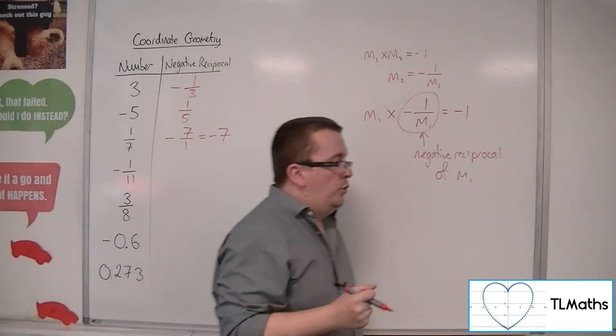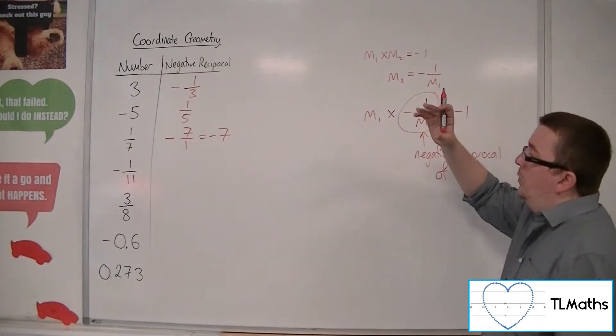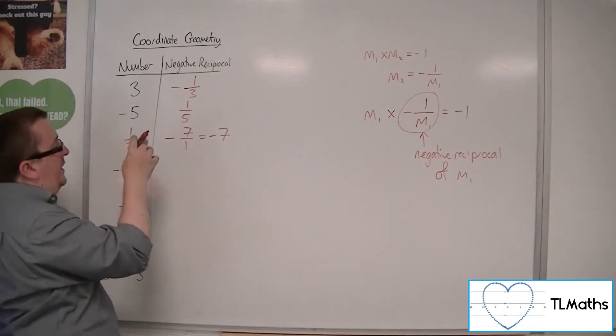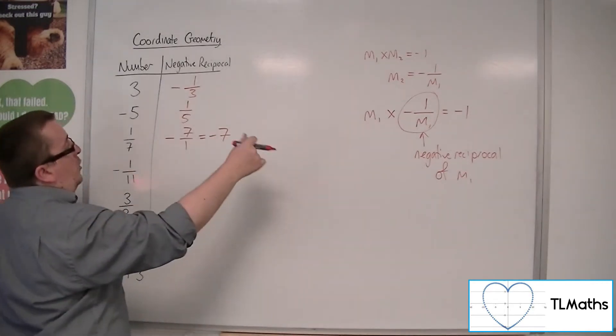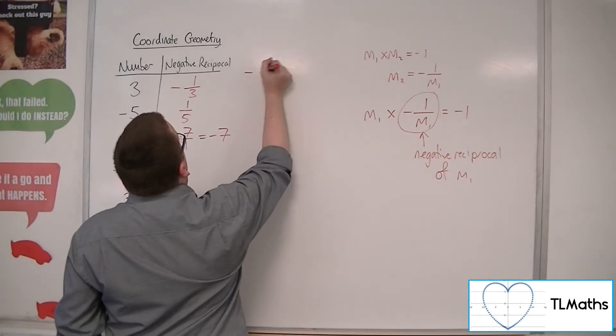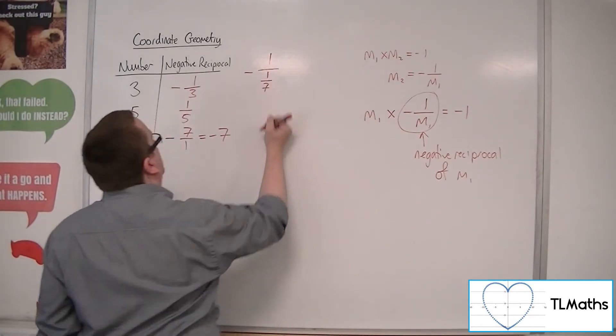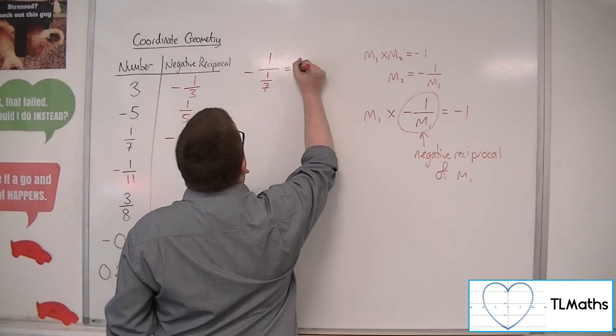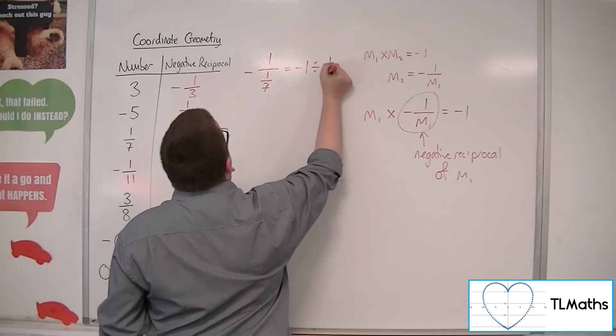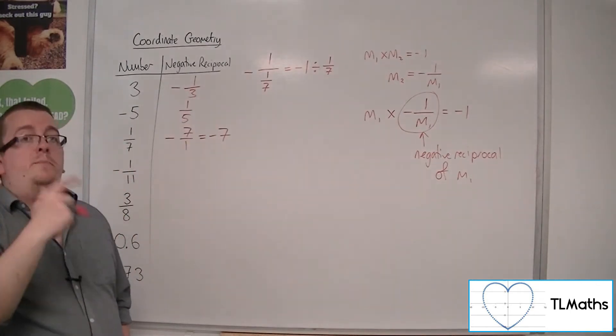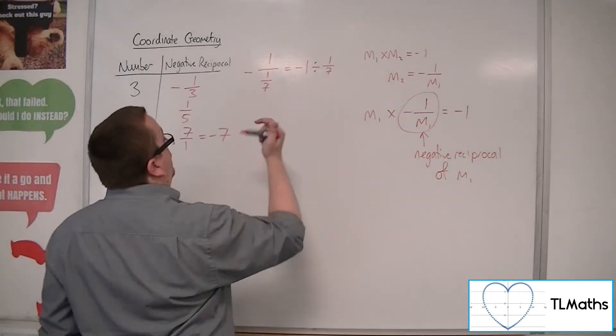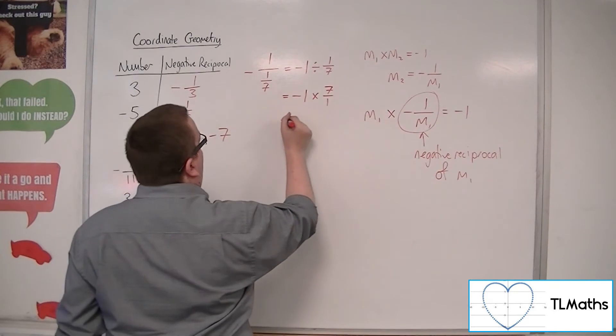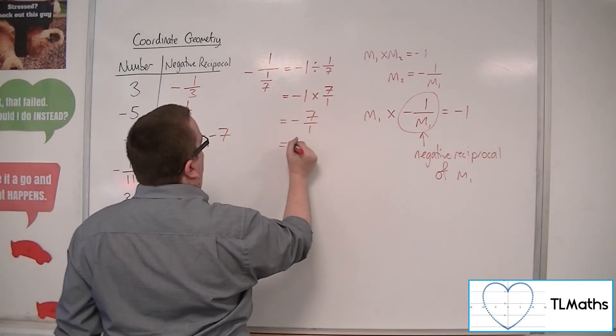So when you're doing 1 seventh, this is always a little bit tricky for people who haven't seen it before. When you're doing this 1 over, you're thinking, well, what is minus 1 over 1 seventh? So when you're doing this, that's minus 1 divided by 1 seventh. Now, if you remember back to when you had to divide by fractions, it's the same as multiplying by the reciprocal. So in actual fact, this is minus 7 over 1, which is just minus 7.